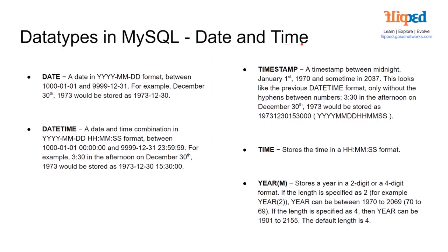Then we have our date and time data types. Our date is a date in year, month, day format between 1000-01-01 and 9999-12-31. For example, December the 30th, 1973 would be stored as 1973-12-30.